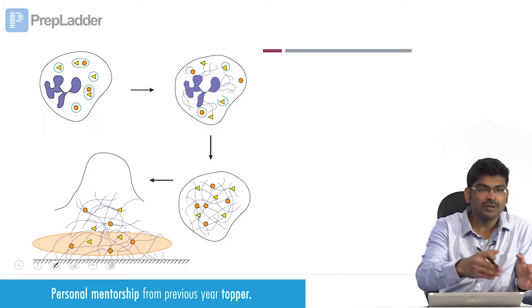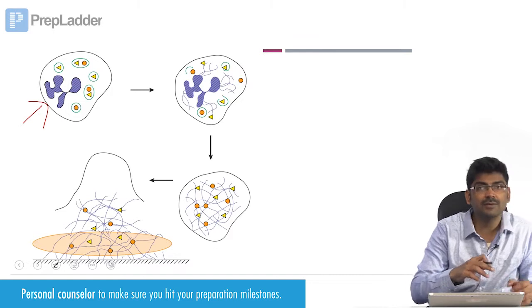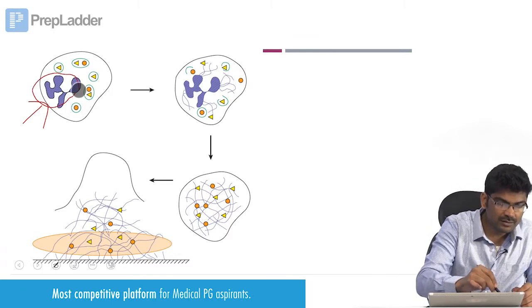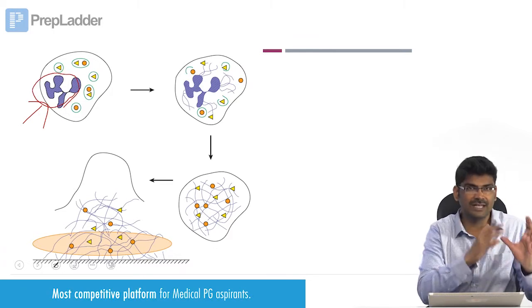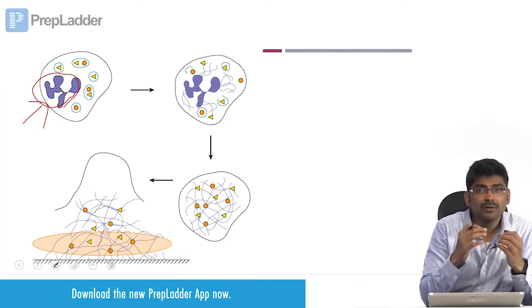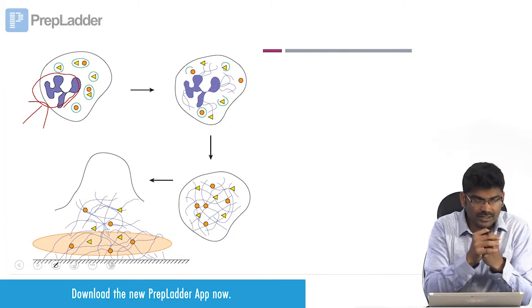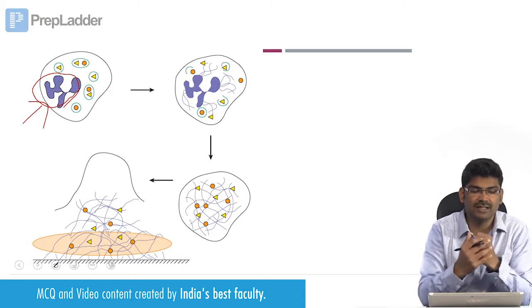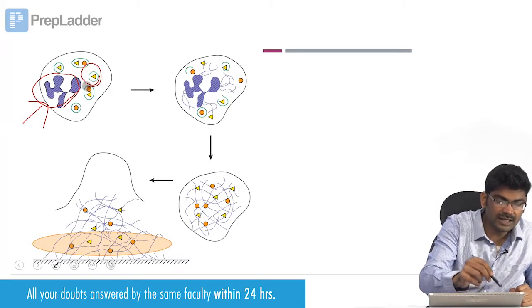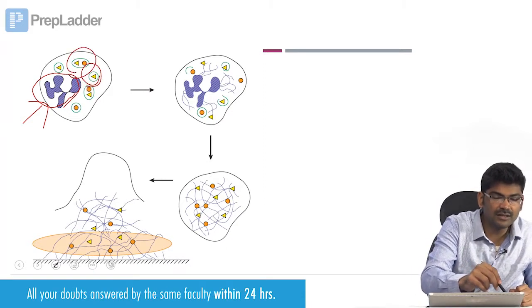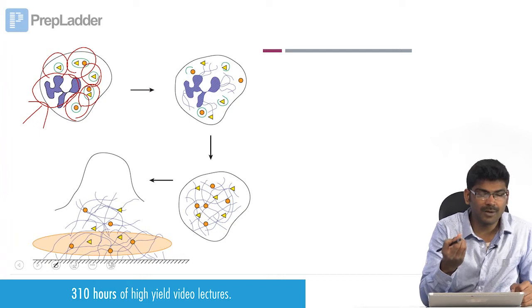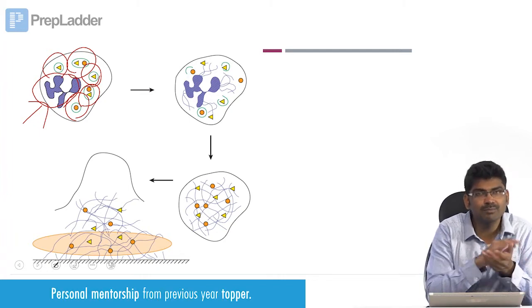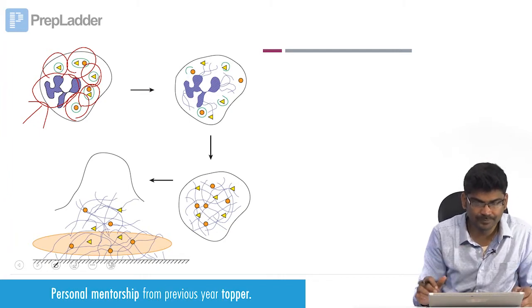In this first diagram, this is your neutrophil. This is your DNA — the nucleus DNA is condensed, highly condensed. And this green colour circle denotes your peptides — the granule containing peptides.